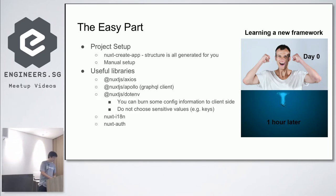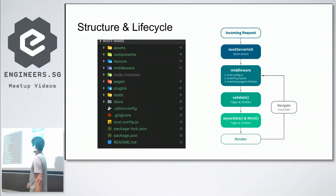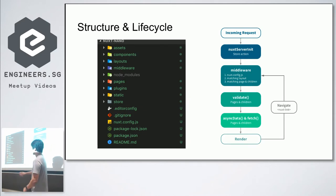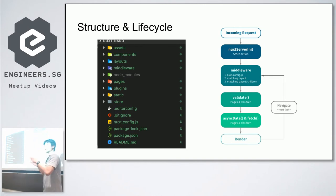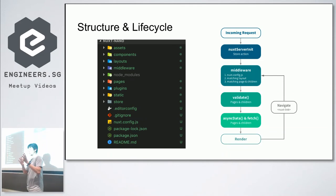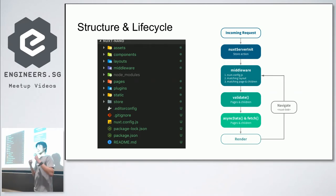When you generate a Nuxt app, you get a specific folder structure. The assets folder is for images — they'll be minified. If you don't want minification, put files in the static folder instead. The store folder is where you put your Vuex store: `index.js` is the main store, and if you name a file `abc.js` it becomes a module. The pages folder is where you structure routes, and middleware runs before pages are rendered.